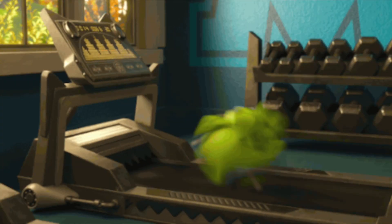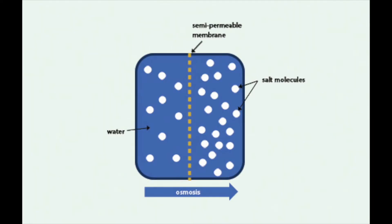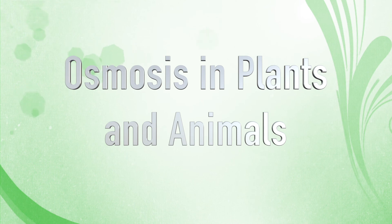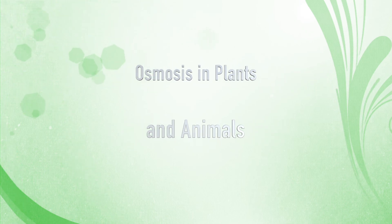Another way to think about osmosis is to think of sweat. When your body is exercising, osmosis is what causes you to sweat. What's happening is the water from your body passes through your semi-permeable skin cells and comes out to the surface. That covers osmosis in plants and animals — thank you so much for watching. If you have any questions, please message me in the chat, and I will tell you what the next assignment is for osmosis.